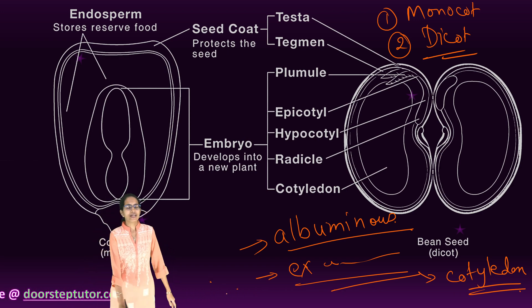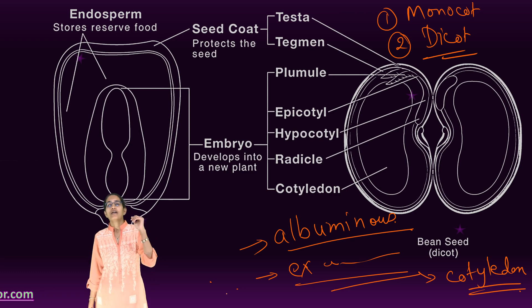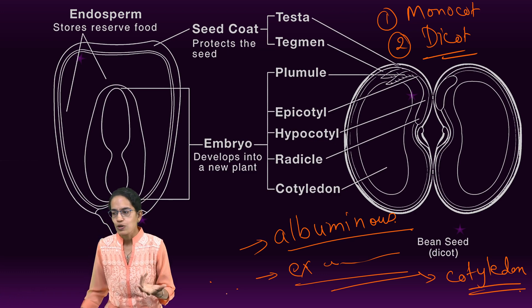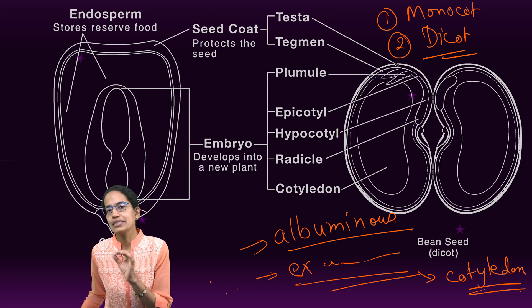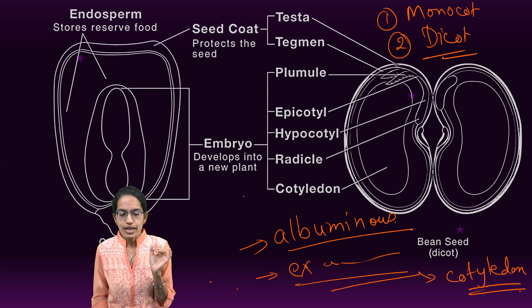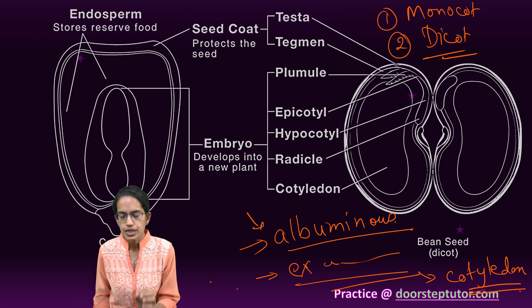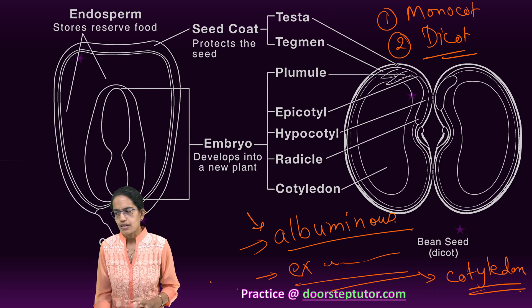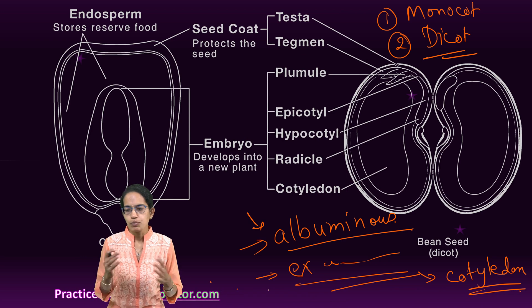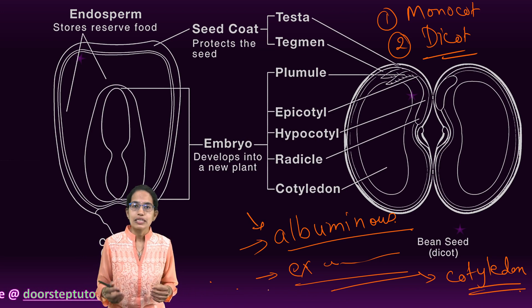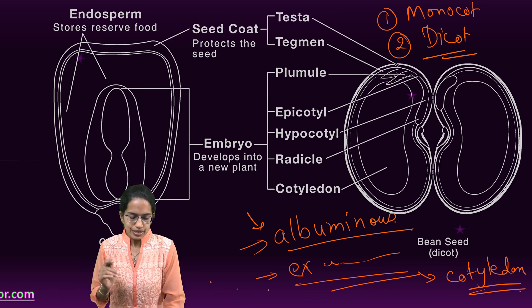In exalbuminous, dicot examples are pea and mango, food is stored in cotyledon. Similarly, monocot examples are orchids, vallisneria. In albuminous, which is endospermic, dicot examples are custard apple and poppy. However, in monocots, good examples are cereal and palm.